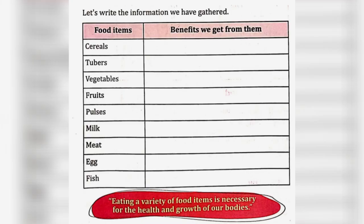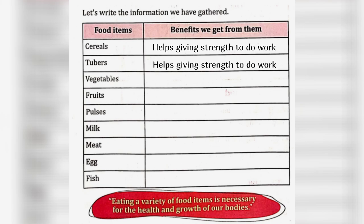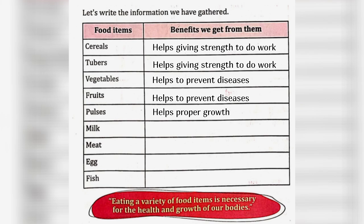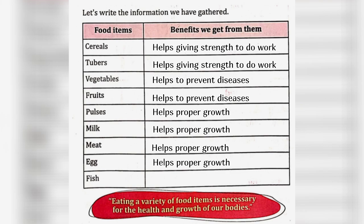Let's write the information we have gathered. Food items and the benefits we get from them: Cereals and tubers help give strength to do work. Vegetables and fruits help to prevent diseases. Pulses, milk, meat, egg, and fish help proper growth. Eating a variety of food items is necessary for the health and growth of our bodies.